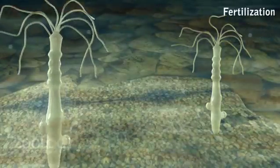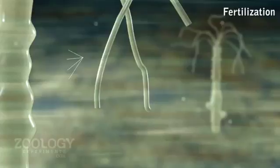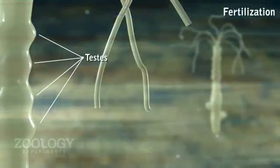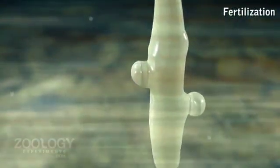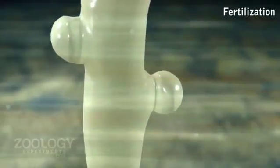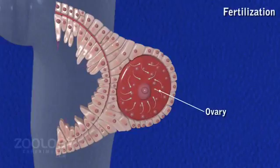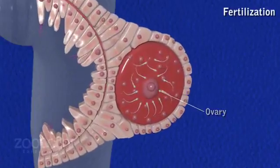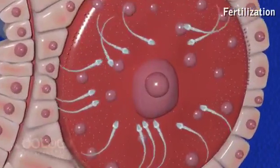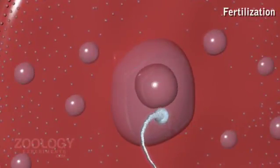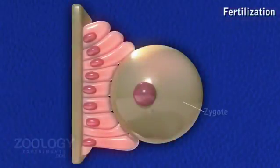Fertilization: Ripe sperms discharged from the testes swim about in water until they approach an ovum and surround it. Numerous sperms may enter the gelatinous covering, but only one enters the ovum and fuses with it. This process is called fertilization, and the fertilized egg is called a zygote.